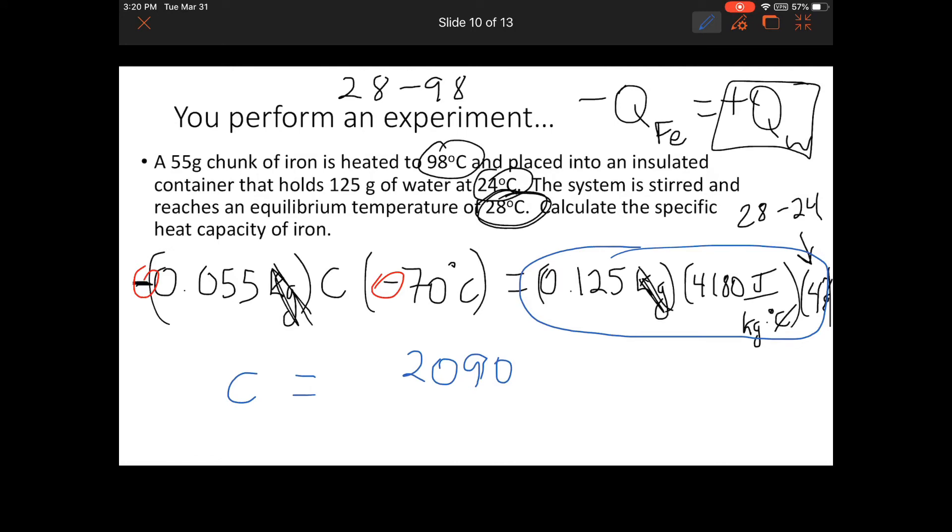I'm dividing each side by 0.055 and 70 to isolate C. So 2090 divided by 0.055 times 70 equals 2090 divided by 3.85 degrees Celsius. My final answer is 543 joules per kg Celsius, if I round.